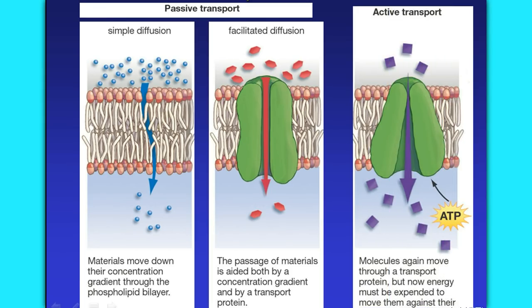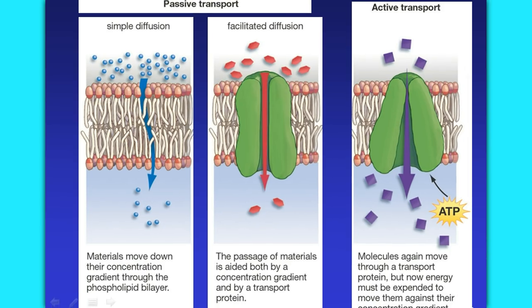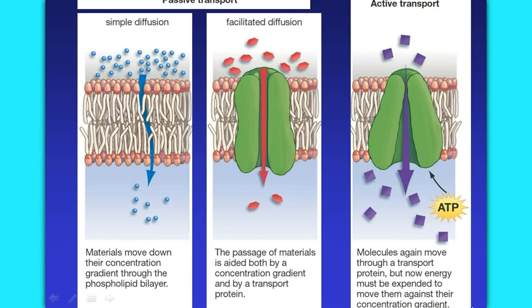Then there's active transport, in which energy is required to move the molecules against their concentration gradient — basically like trying to pedal your bike uphill. Active transport also involves the use of a specialized protein in the cell membrane, but it does require the cell to expend energy.